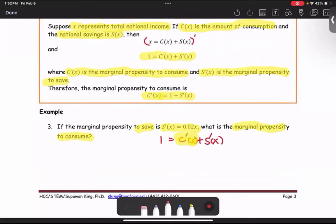We just rearrange the expression to get C prime of X equals 1 minus S prime of X. The problem gives S prime of X equals 0.02X. So this is 1 minus 0.02X.